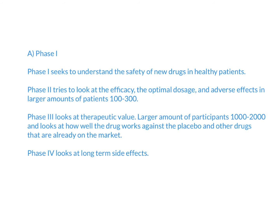Then we move forward to phase three, where we look at the therapeutic value. We scale up to around the thousands in terms of participants, and then see how well the drug works against the placebo. Obviously, we want the drug to work better than placebo, because if it doesn't, then it's essentially the same as not giving the medication.